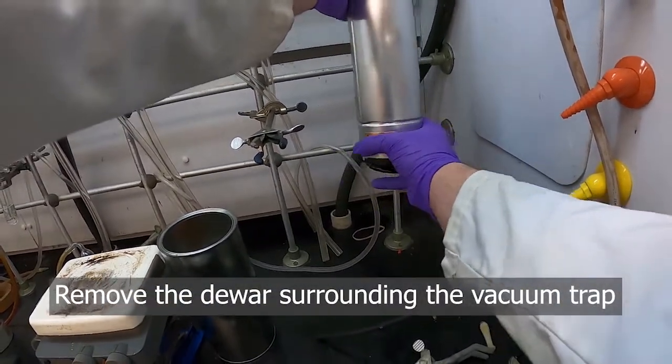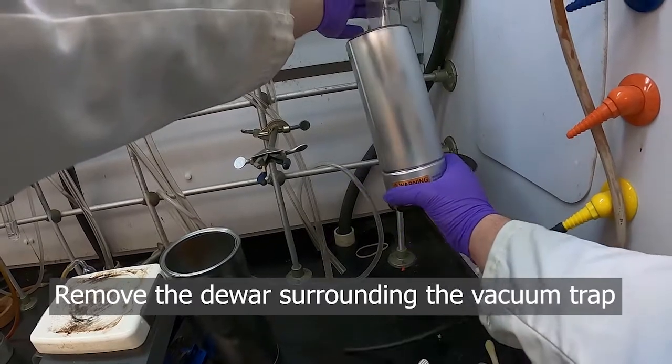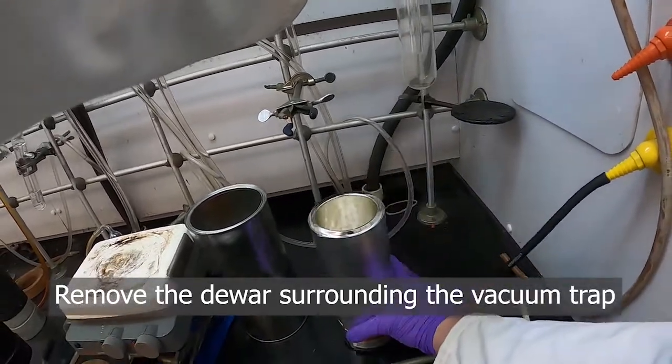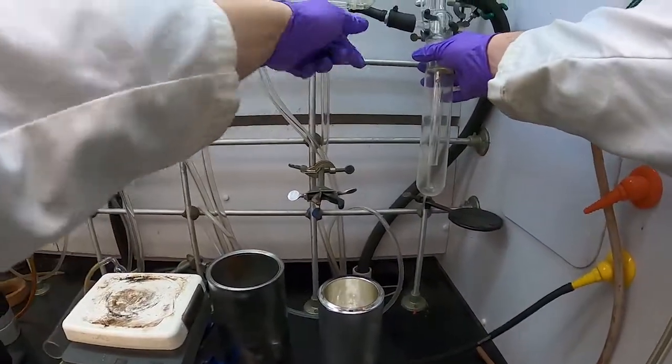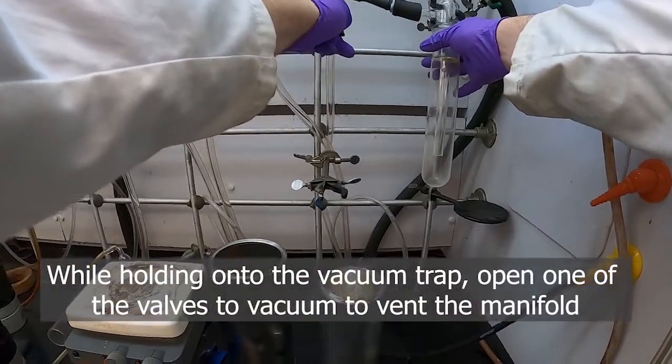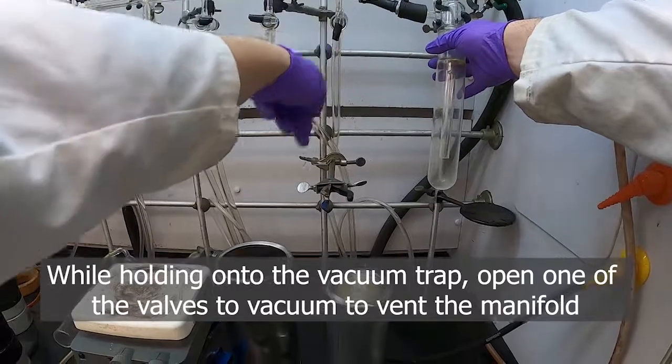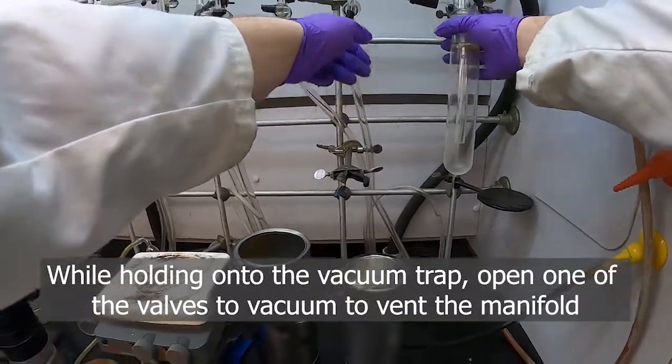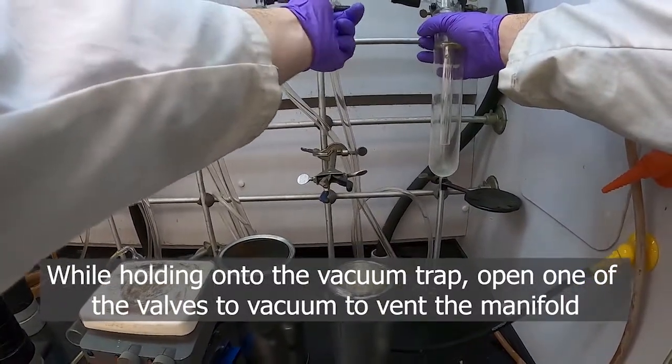And move our dewar out, and then we vent it through the manifold. So I'll just turn this one side to one of our hoses dangling here. Once we hear the vacuum ends, close it again.